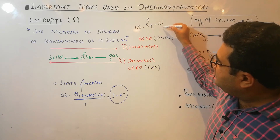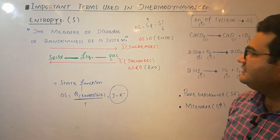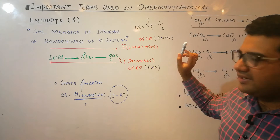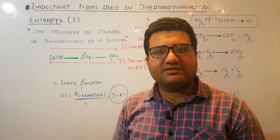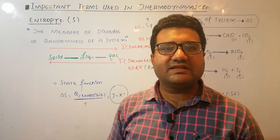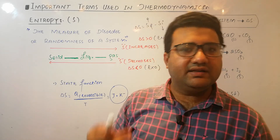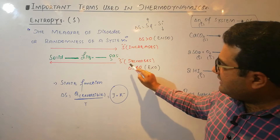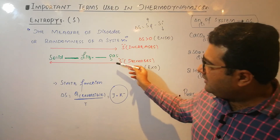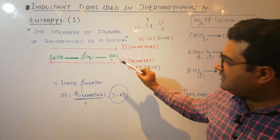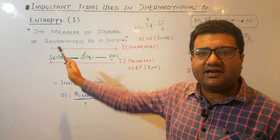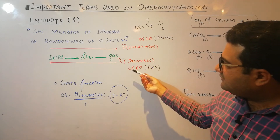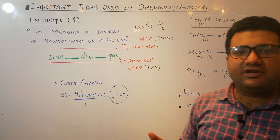When moving from solid to gas, the process is endothermic, so in endothermic processes the entropy increases and delta S is greater than zero. In the reverse direction — gas to liquid to solid — entropy decreases, delta S is less than zero, and these processes are exothermic. In exothermic processes, entropy decreases and the change in entropy is negative.